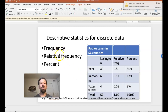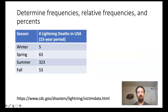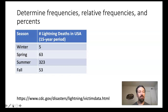There should now be an opportunity for you to determine frequencies, relative frequencies, and percents based on the number of people killed by lightning strikes in the USA in four different seasons over a 15-year time period.